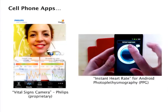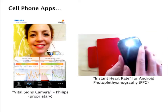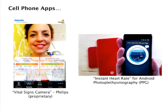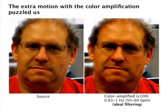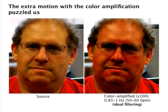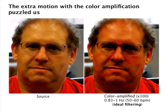There are also apps for iPhone — the Philips Vital Sign Camera (proprietary) — and an Android instant heart rate app that shines the flash on your finger over the camera. That's step one of having a view on the world that lets you see sub-threshold changes. When we saw the color-amplified face video, we noticed extra apparent motions, which caused us to wonder why he looked like he was moving more than he was — and that led to the motion magnification work.